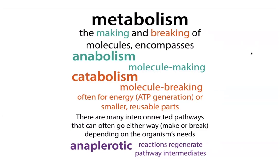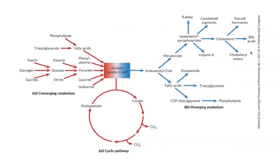In our enzyme reactions, we had intermediates in the reaction like a tetrahedral intermediate — some step in the middle of forming the product where we had covalent bonds. It wasn't a transition state, but it was just in that one reaction. When we talk about metabolism, our intermediates are going to be an intermediate in the overall pathway — not in a single reaction, but in a pathway.